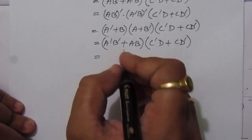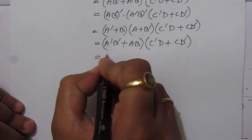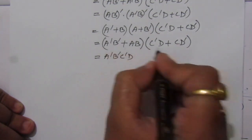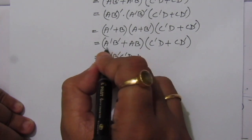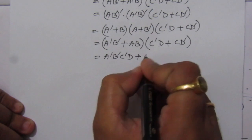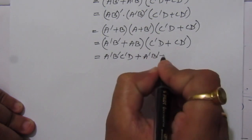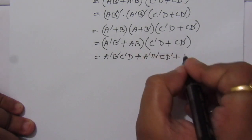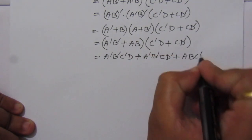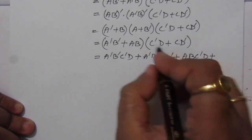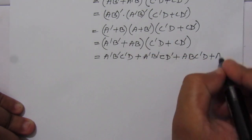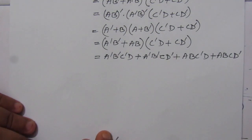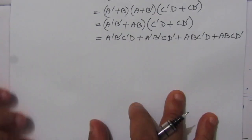Expanding fully, we get: Ā·B̄·C̄·D + Ā·B̄·C·D̄ + A·B·C̄·D + A·B·C·D̄. This is the sum of minterms expression. Now we will make the four-variable Karnaugh map and from that find the simplified function.